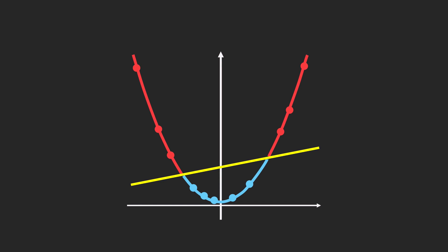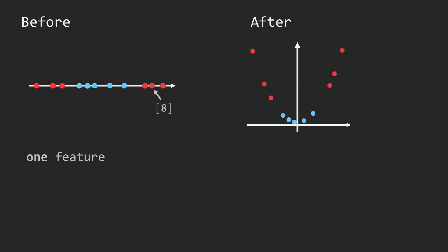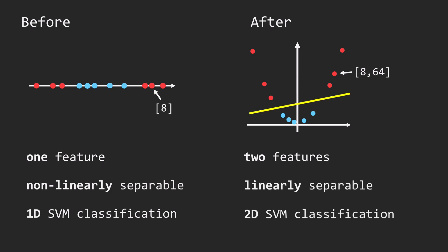Due to our chosen function – squaring – the transformed space resembles a curved line. By adding more points to simulate all possible positions in this new space and mapping them back to our original one-feature space, we see clearly how the non-linear classification problem has been solved by increasing dimensionality. Originally we had one feature per point, but we added a second feature, turning a non-linear classification task into a linear one solvable by a two-dimensional SVM.